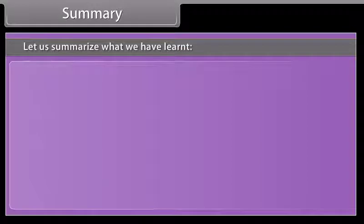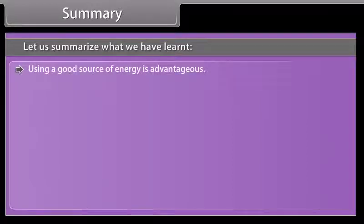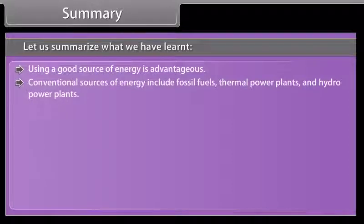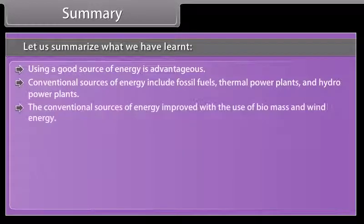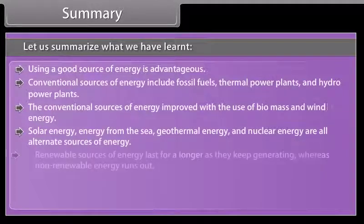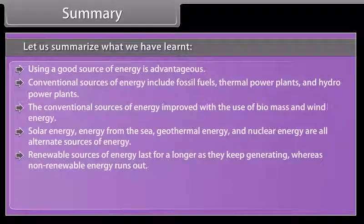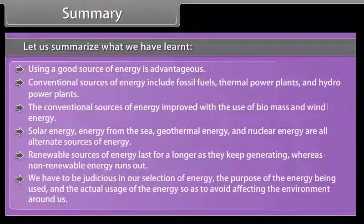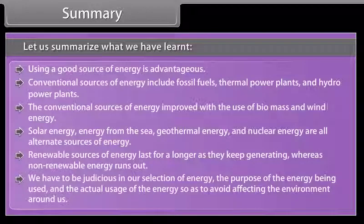Summary. Let us summarize what we have learnt. Using a good source of energy is advantageous. Conventional sources of energy include fossil fuels, thermal power plants, and hydropower plants. The conventional sources of energy improved with the use of biomass and wind energy. Solar energy, energy from the sea, geothermal energy, and nuclear energy are all alternate sources of energy. Renewable sources of energy last for as long as they keep generating, whereas non-renewable energy runs out. We have to be judicious in our selection of energy, the purpose of the energy being used, and the actual usage of the energy so as to avoid affecting the environment around us.